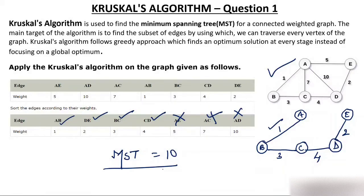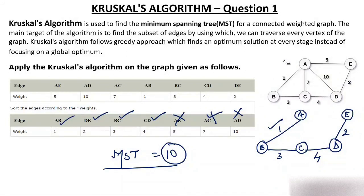You might be wondering: will I always get only one shape of minimum spanning tree? No — you can get more than one shape. But the minimum spanning tree weight will always be 10. For example, if multiple edges have equal weight (say, three edges each with weight 1), you can arrange them in any order. One of them might create a cycle and be excluded, but the final MST weight will always remain 10. Shape could be different, but weight will not change.